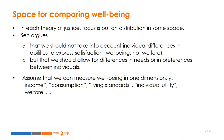Amartya Sen is among the key contemporary economists who have contributed to rethinking the concept of economic justice in the context of economic development. He argues that we should not take into account individual differences in abilities to express satisfaction — wellbeing, not welfare. This means that we must focus on external factors affecting welfare, such as the presence and quality of infrastructure, and not on internal factors such as individual abilities, but that we should allow for differences in needs or in preferences between individuals.